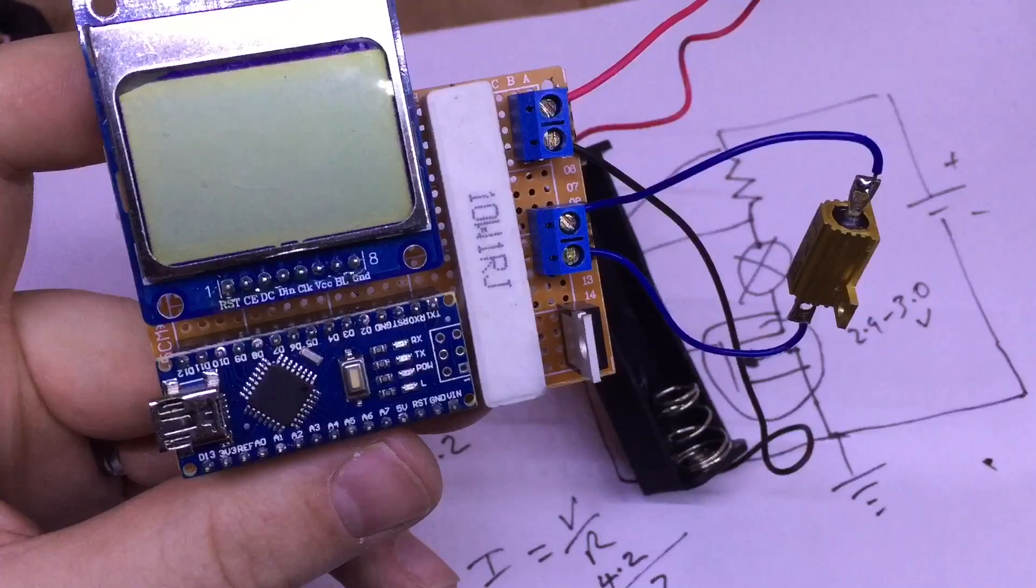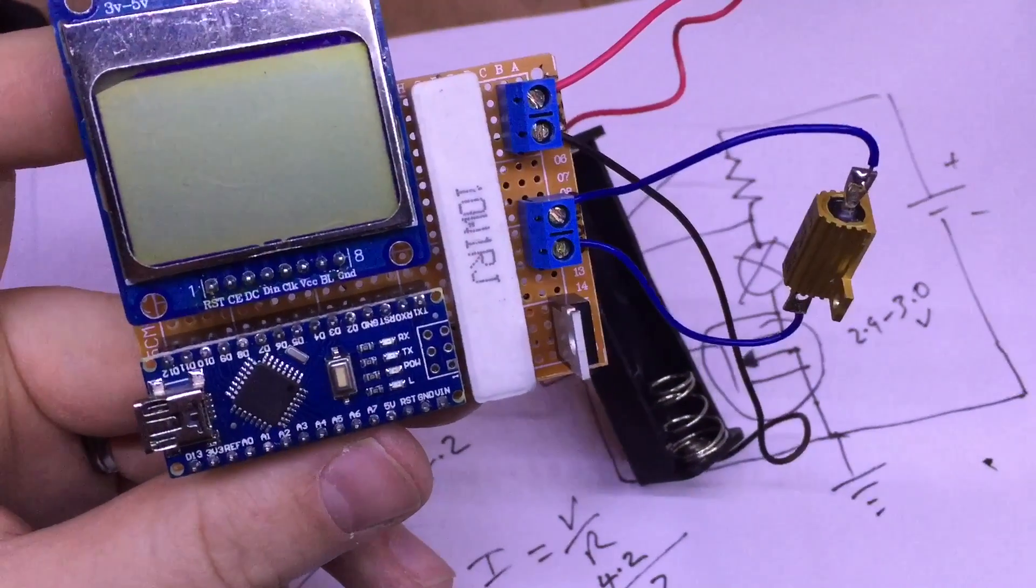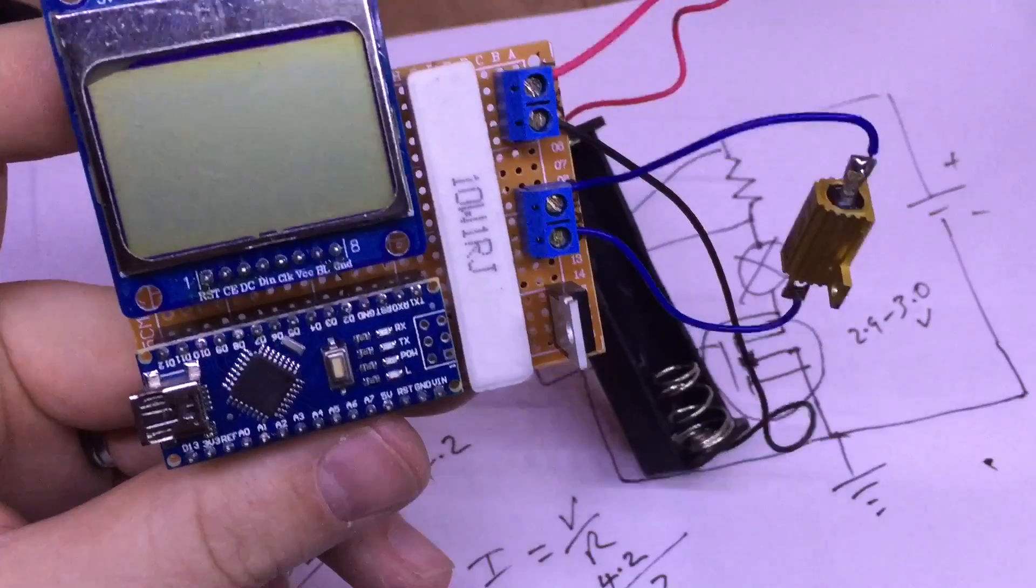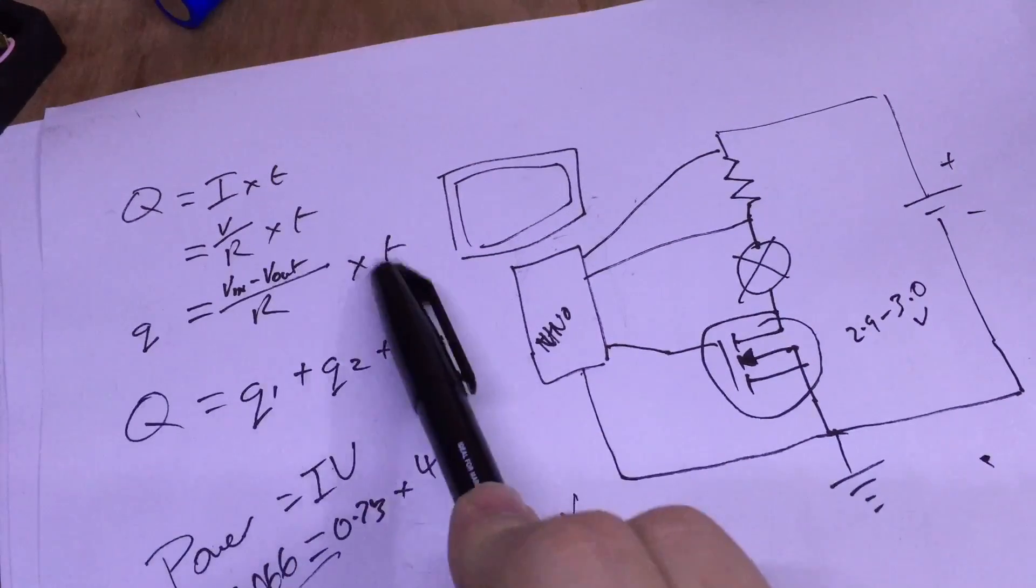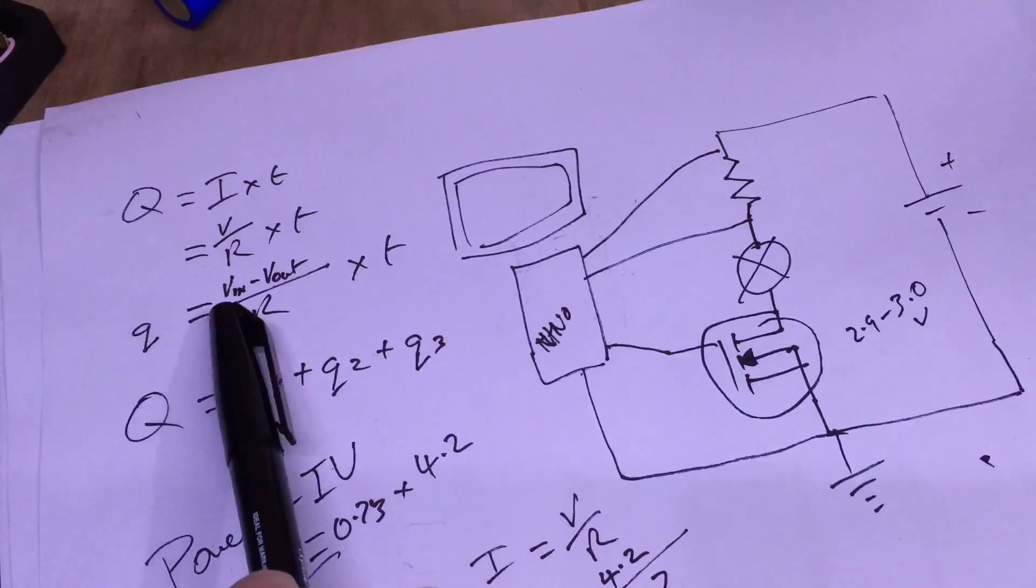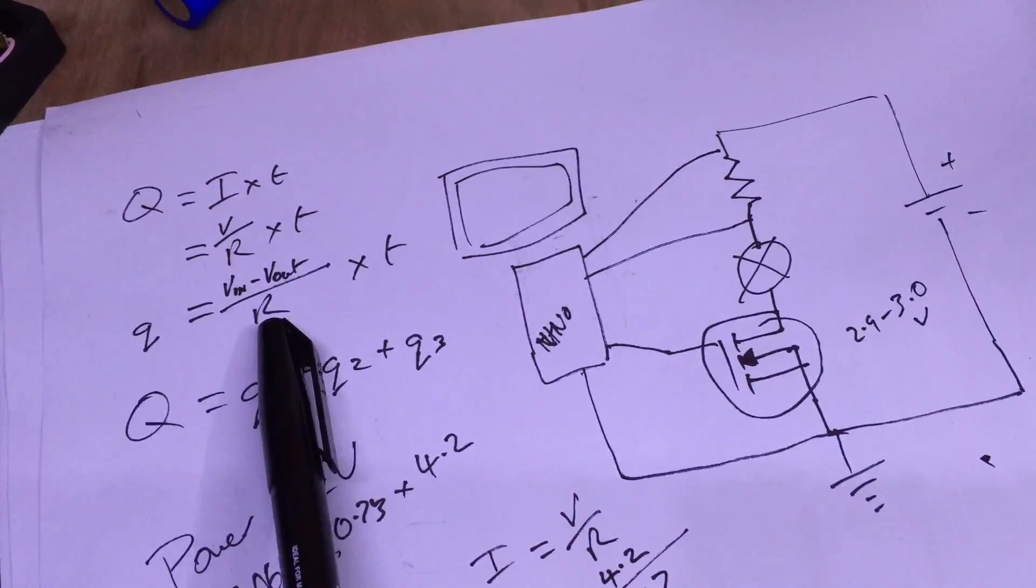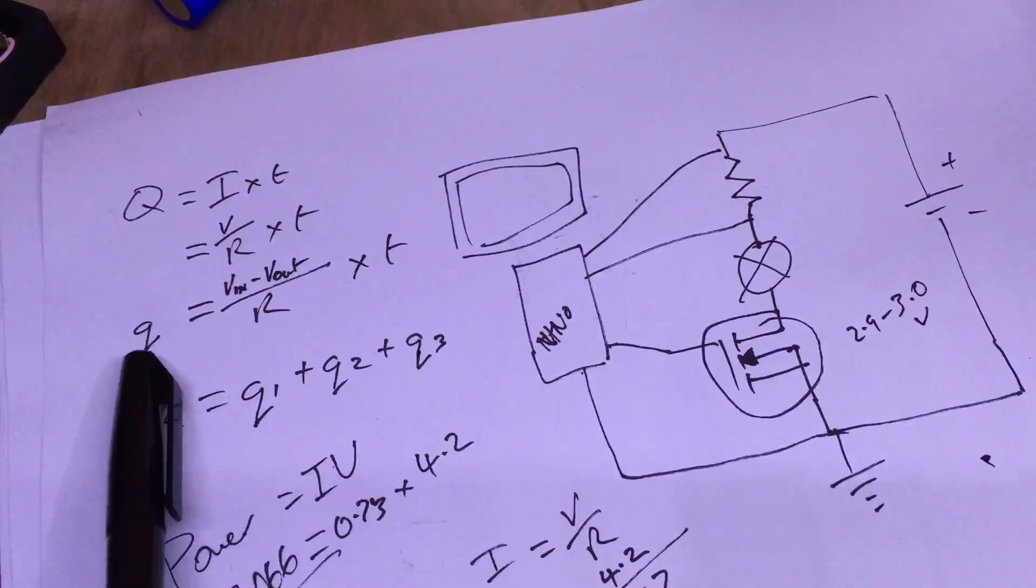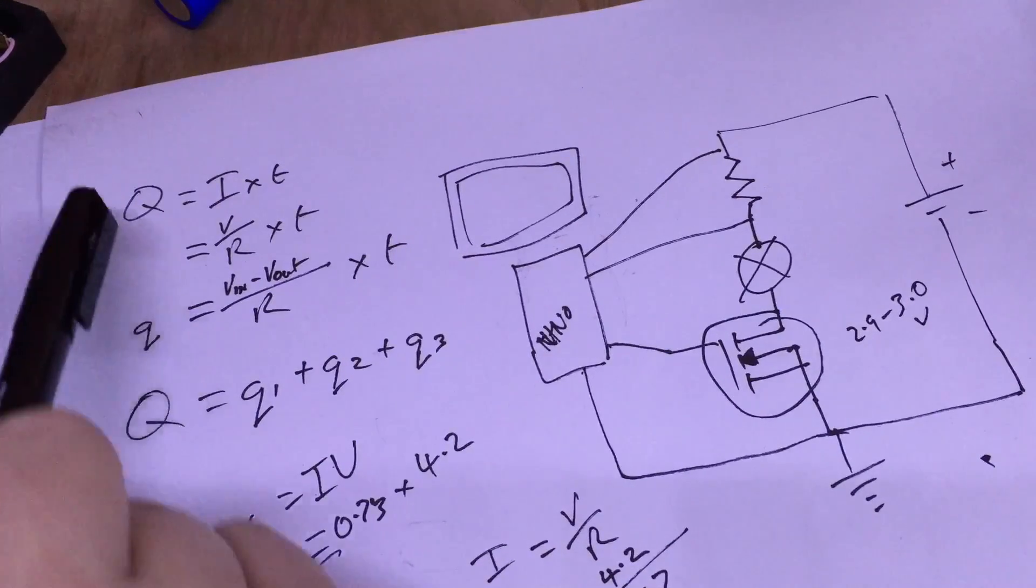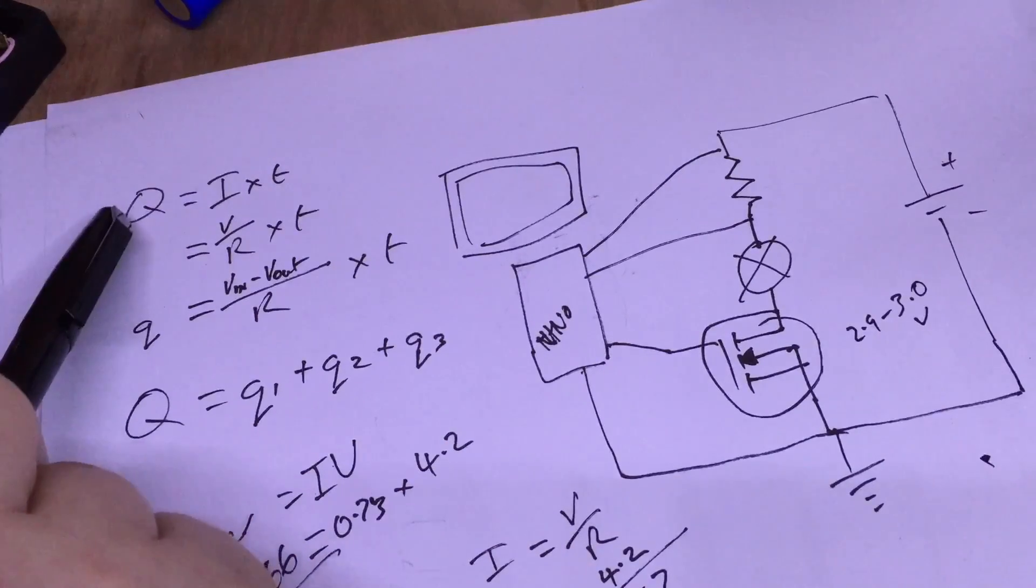Now I'm not going to go through the Arduino code line by line, because it is fairly simple, and I'm not the best coder in the world. But all it's doing essentially is this sum here. Every second or so, it's checking the voltage drop across that resistor, and dividing it by the resistance, multiplying it by the time, and adding little q to big Q every time it does it. And this is our cumulative capacity.